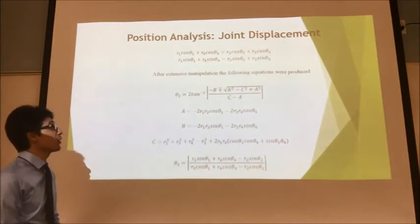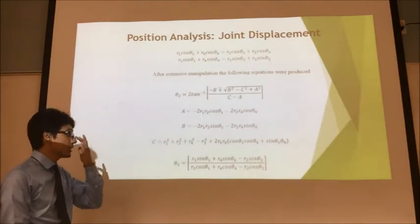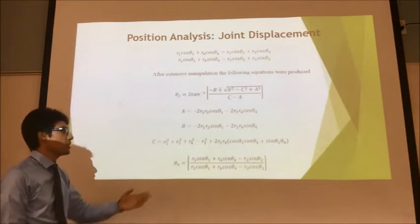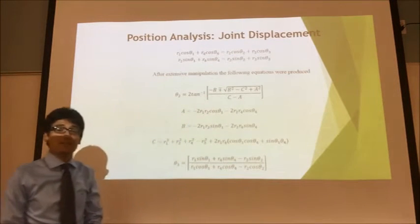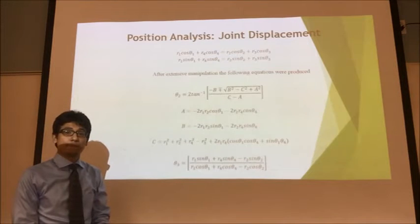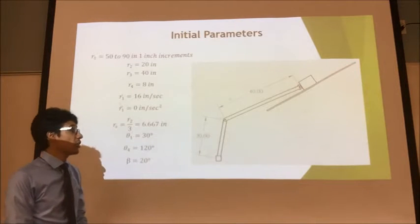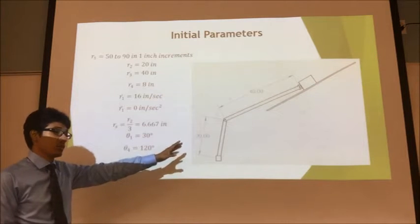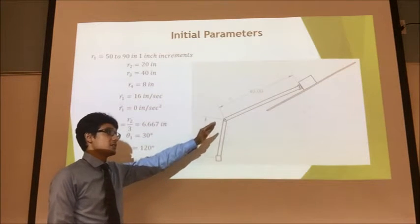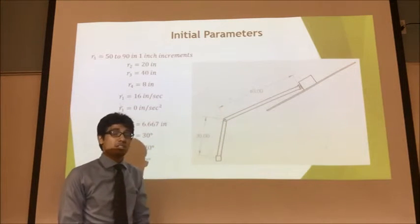Here we have our position analysis. We have generated several formulas. And as you can see, for our theta 2, we'll have a positive and a negative. So we're going to have two sets of solutions. And here are our initial parameters. This is a brief sketch showing the slider crank mechanism and the surface that it will be sliding on.